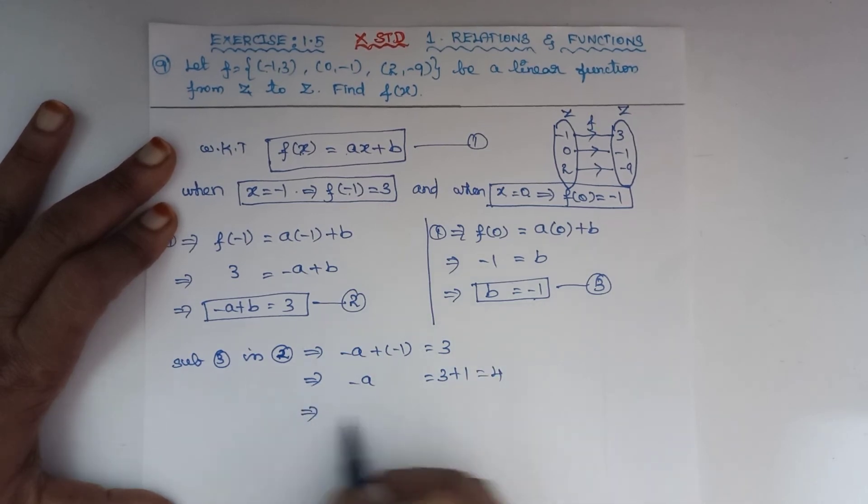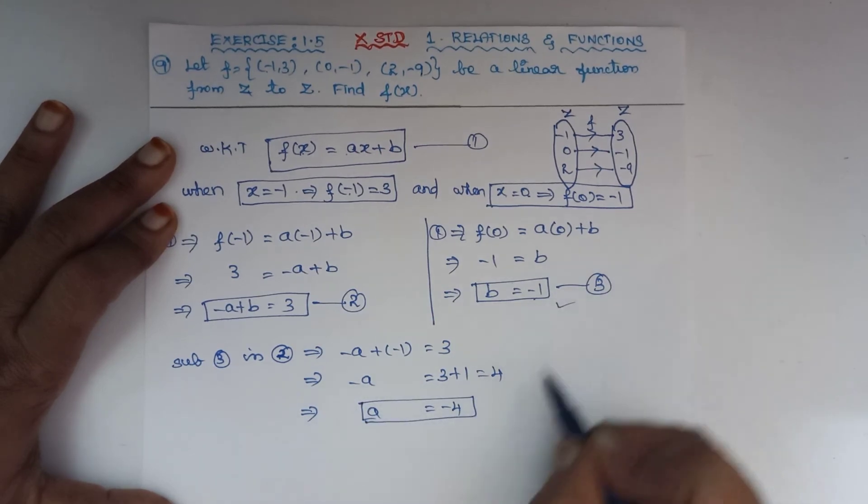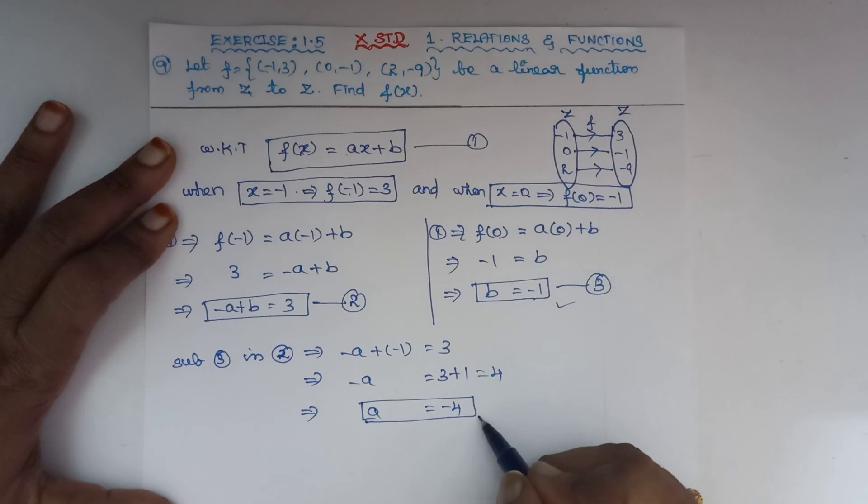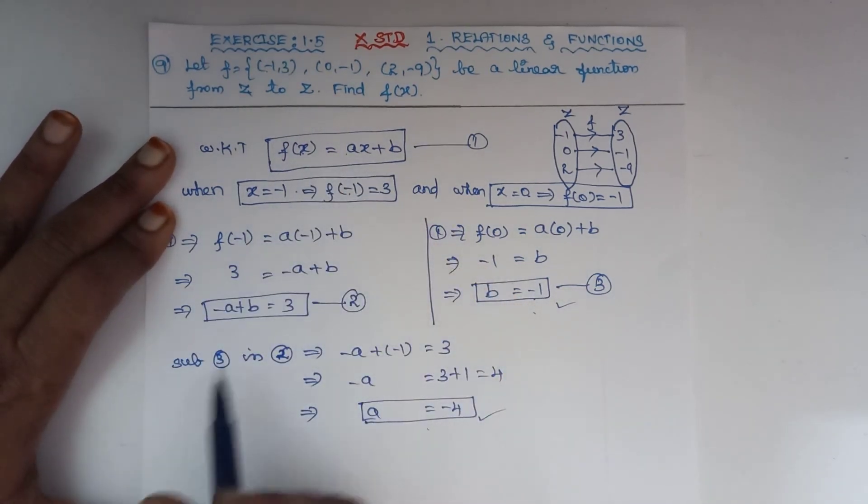-a = 4, so a = -4. Now we know the value of a and the value of b. Substituting these two values into the first equation, we'll get f(x).